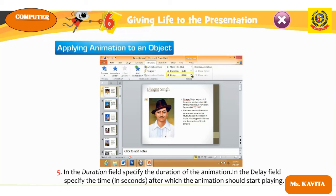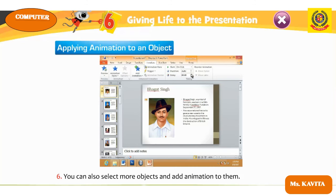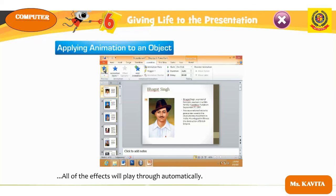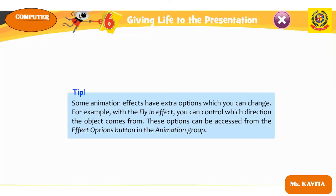In the Delay field, specify the time in seconds after which the animation should start playing. To preview the animation, click the Preview button in the Preview group — all effects will play through automatically. Some animation effects have extra options, such as controlling direction for the Fly In effect, accessible from the Effect Options button in the Animation group.